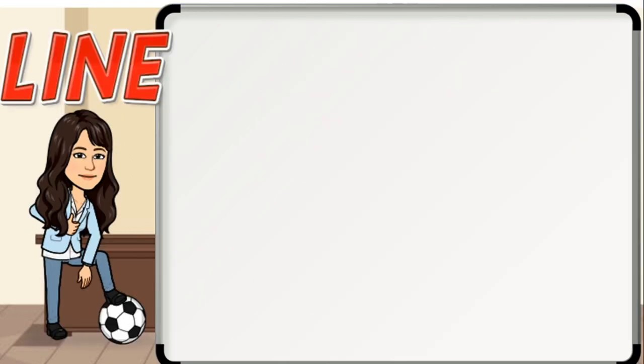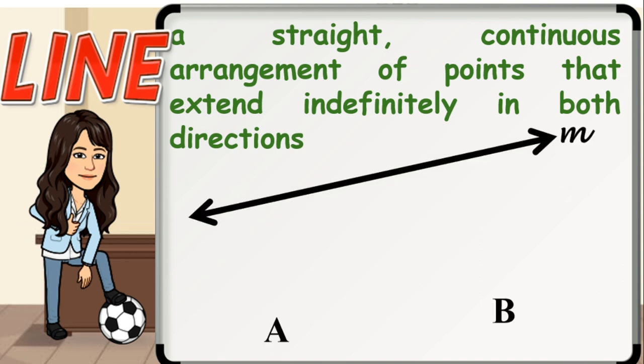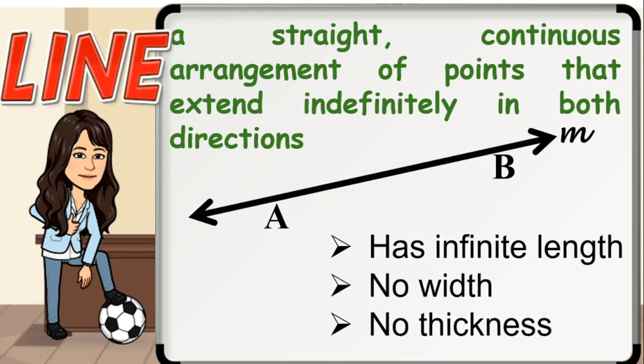Second, we have the line, which is a straight, continuous arrangement of points that extend indefinitely in both directions. So how do we describe a line? It has no width, no thickness, but it has an infinite length. A line is assumed to be straight. Also, a line is drawn with arrowheads on both ends.